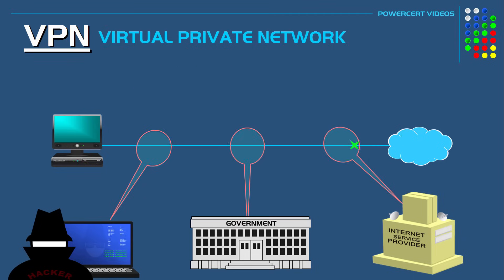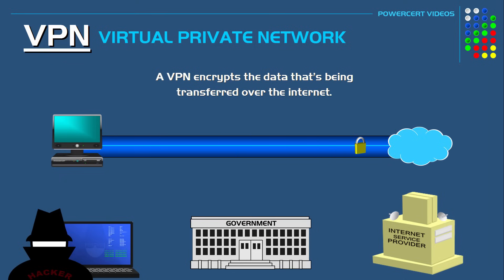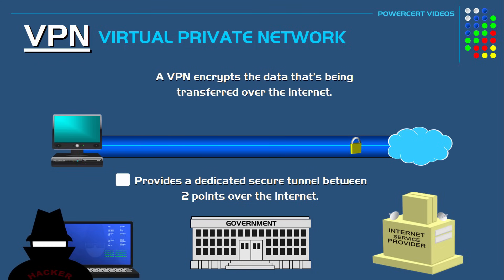A VPN, or virtual private network, not only hides your IP address but also encrypts the data being transferred between your computer and the internet. Any activity such as viewing web pages or transferring files is encrypted and kept private. No logging is involved, and a VPN provides a dedicated secure tunnel between two points over the internet.